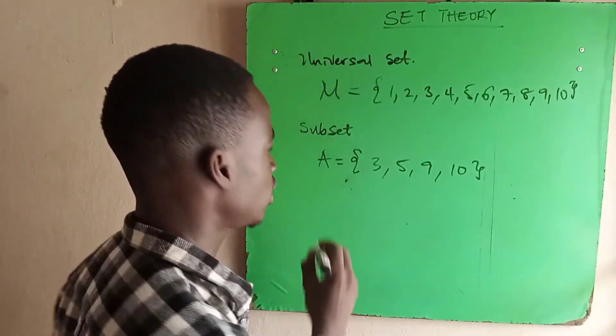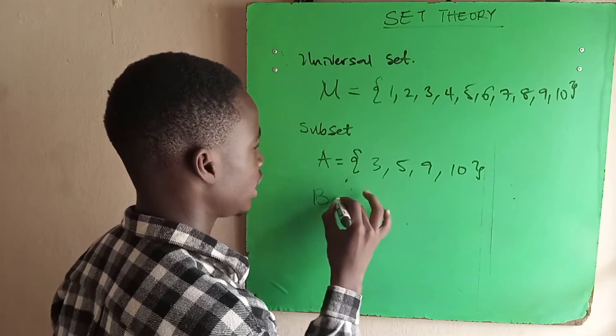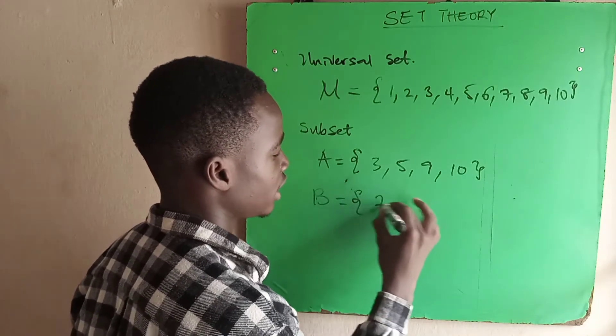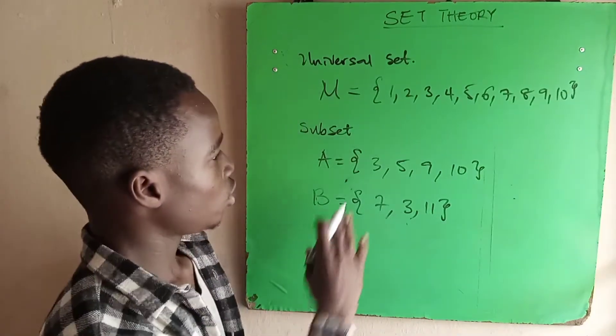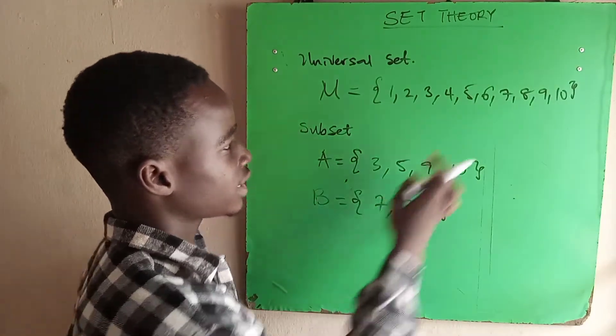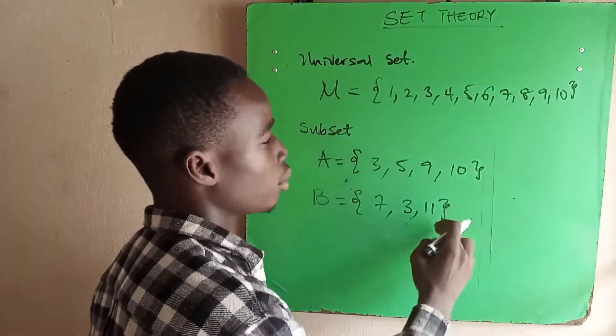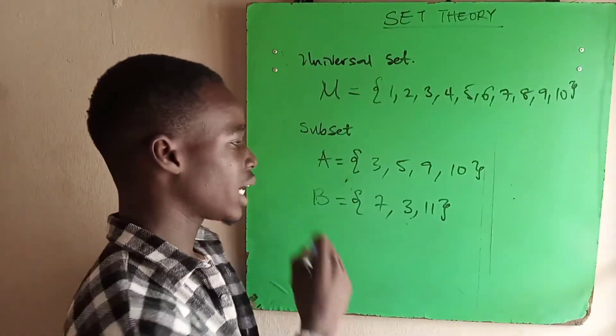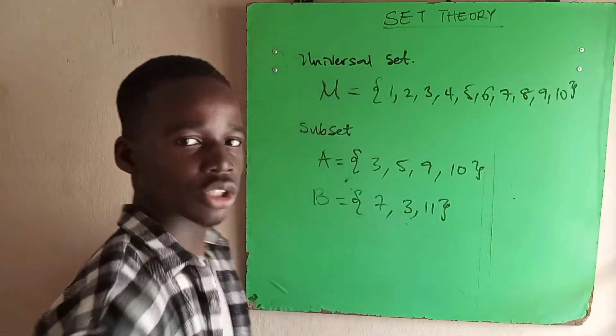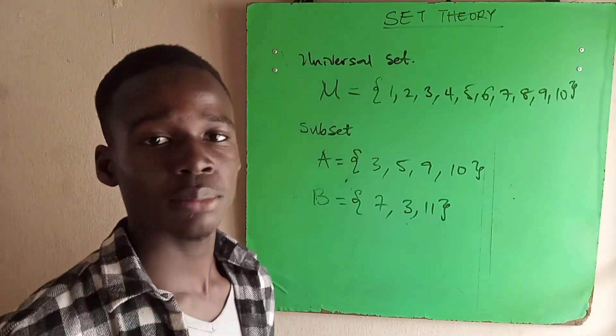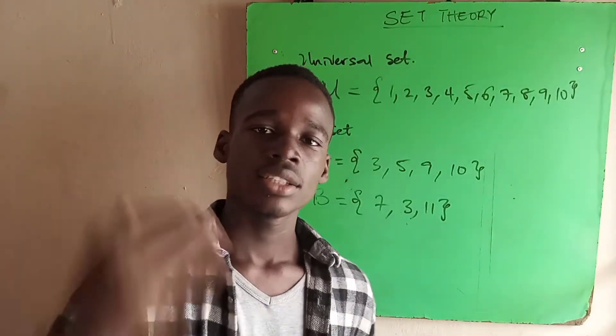We pick a set B with 7, 3, 11. Looking at this set, we have 7 here, we have 3 here, but we do not have 11 yet. So we can say B is not a subset of the universal set. These are basic terms we use in set theory.